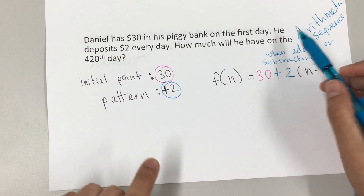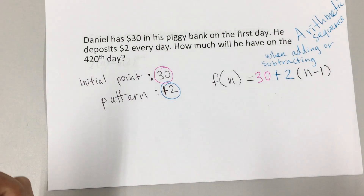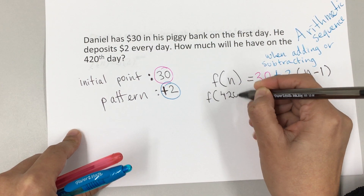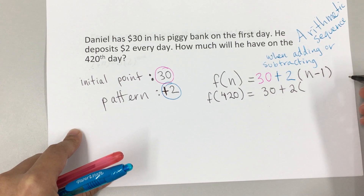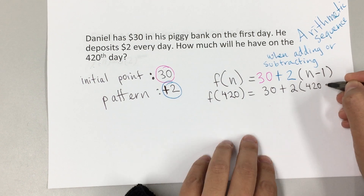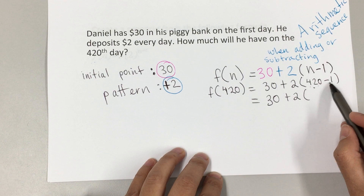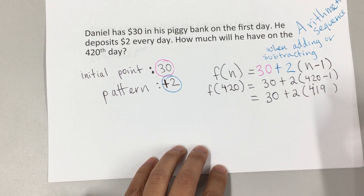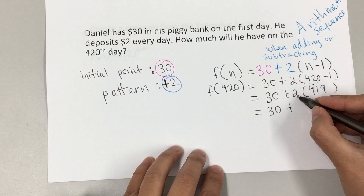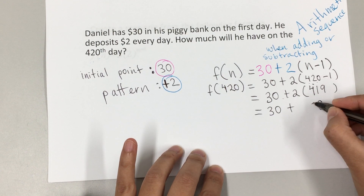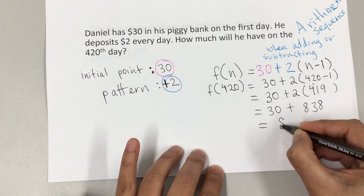This is asking us to figure out how much money Daniel will have after 420 days, so n will be 420. We find f(420) = 30 + 2 times (420 − 1). That equals 30 plus 2 times 419. According to order of operations, before we add we multiply: 2 times 419 is 838. Then we add 30 plus 838, which gives us 868.